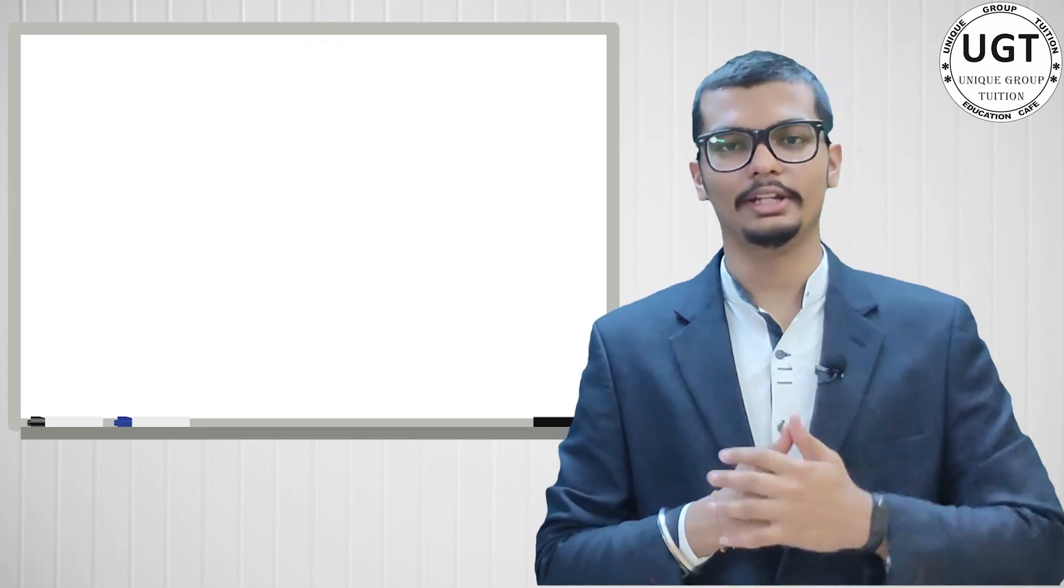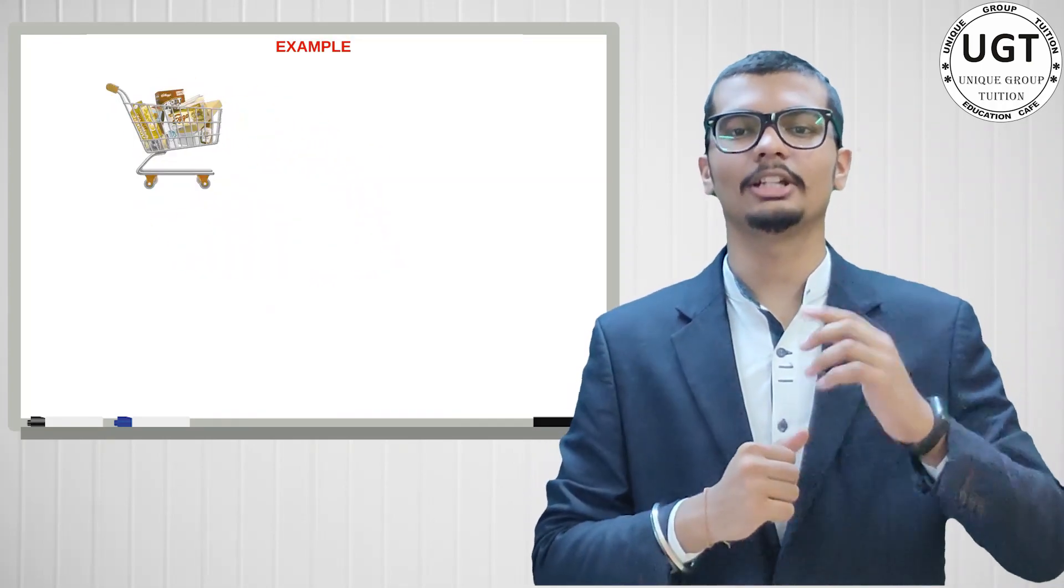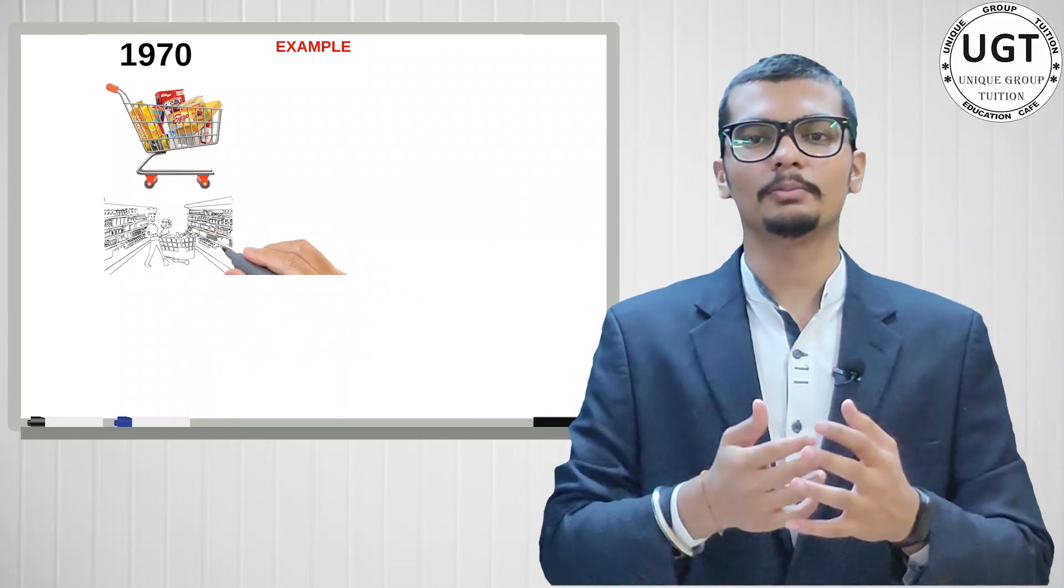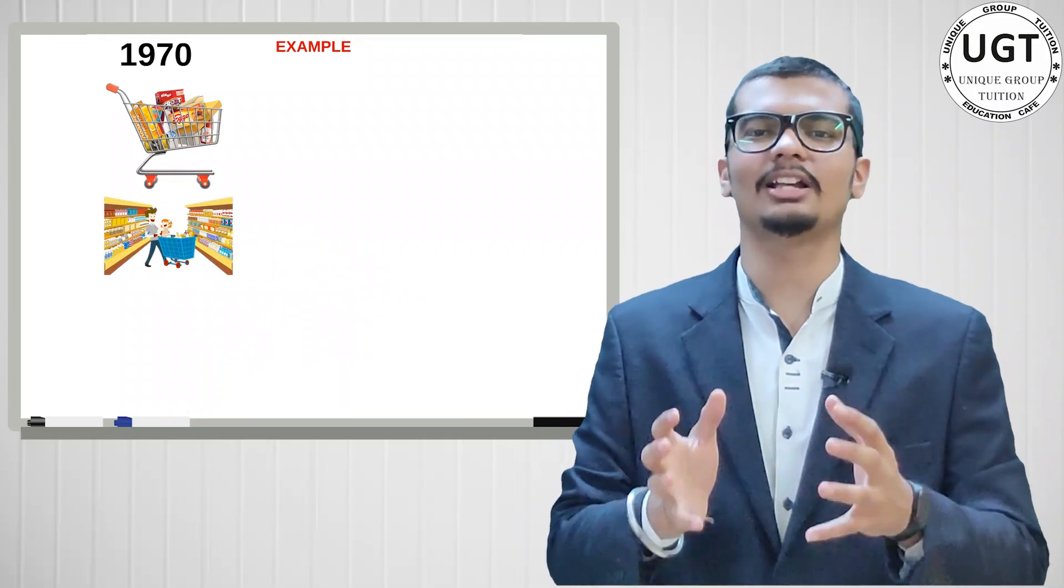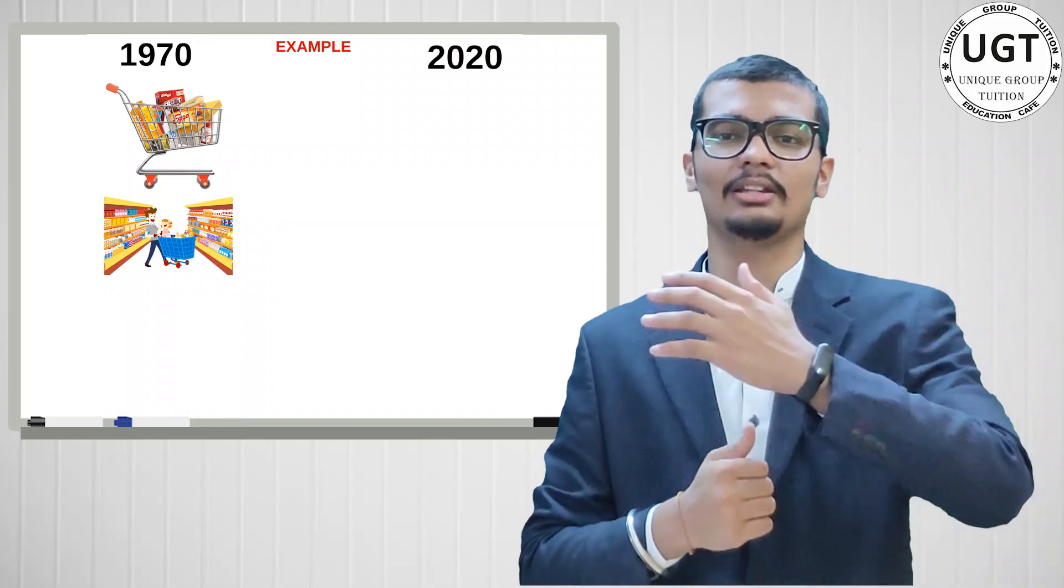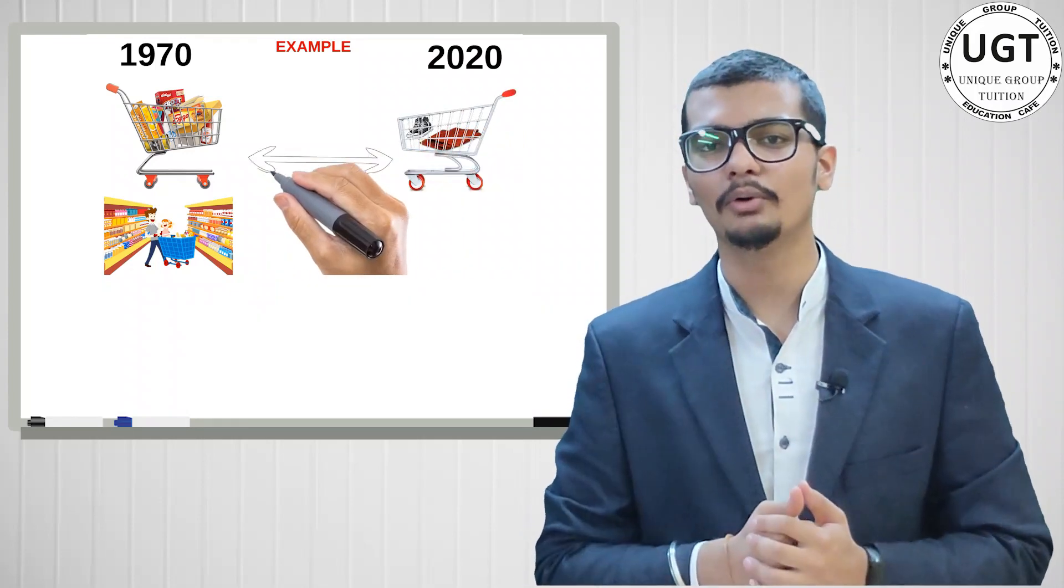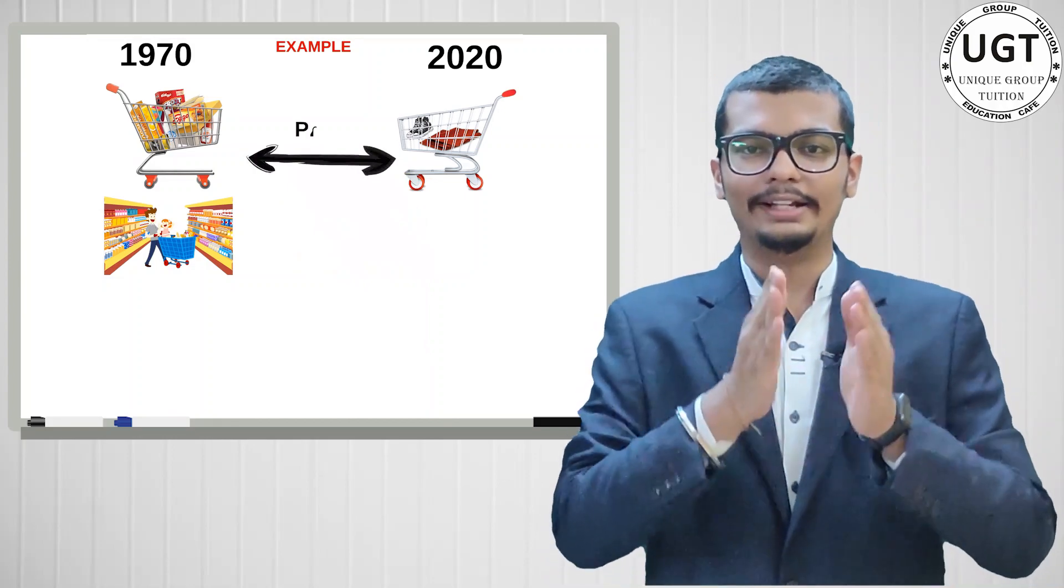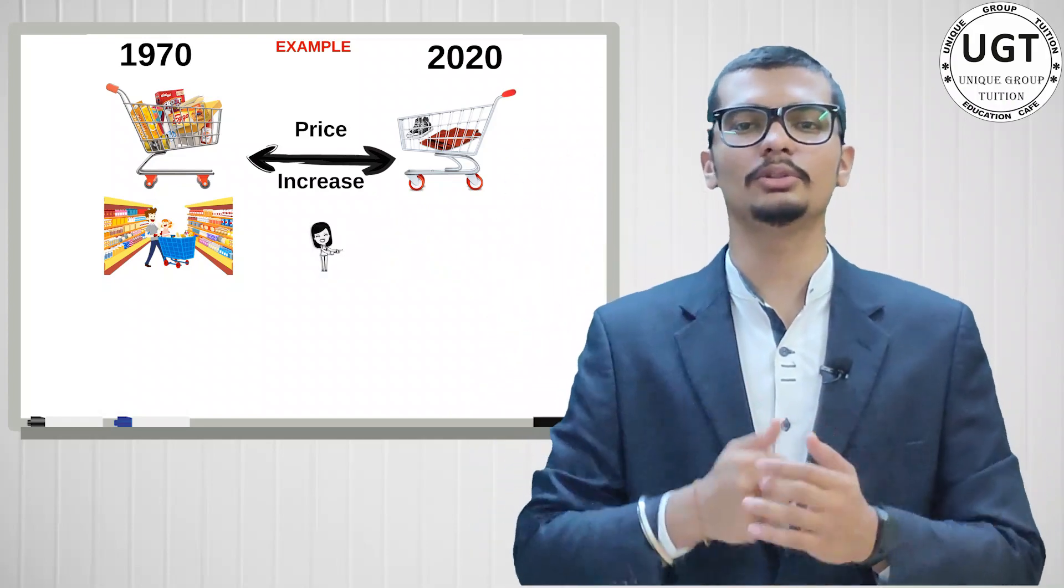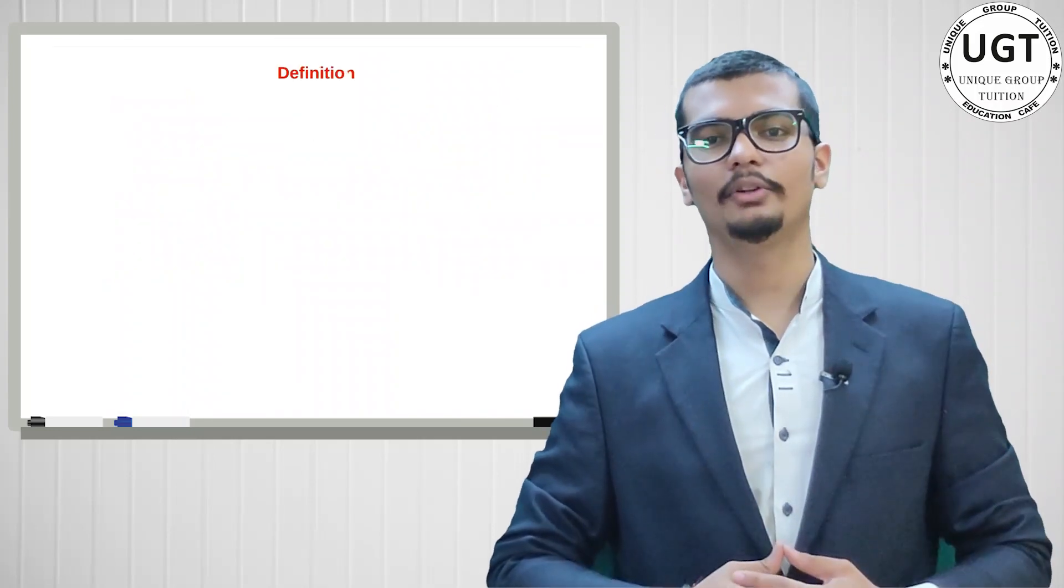First of all, a shopping trolley. In 1970, if someone has 100 rupees, they could purchase many items. But nowadays in 2020, if they go shopping with 100 rupees, they can only purchase two or three products. This means that from 1970 to 2020, the price of every product in the economy has increased, which in simple language we call inflation.